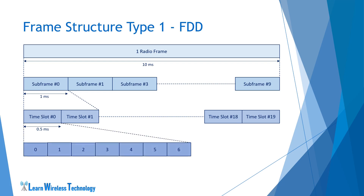Each slot is further divided into 7 OFDM symbols. These symbols are used to carry the data bits over the radio interface. As you can see, each OFDM symbol is preceded by a small amount of period — this is a guard period, also known as cyclic prefix. The total number of OFDM symbols in each time slot depends on the type of cyclic prefix used. There are two types of cyclic prefixes: normal cyclic prefix and extended cyclic prefix.